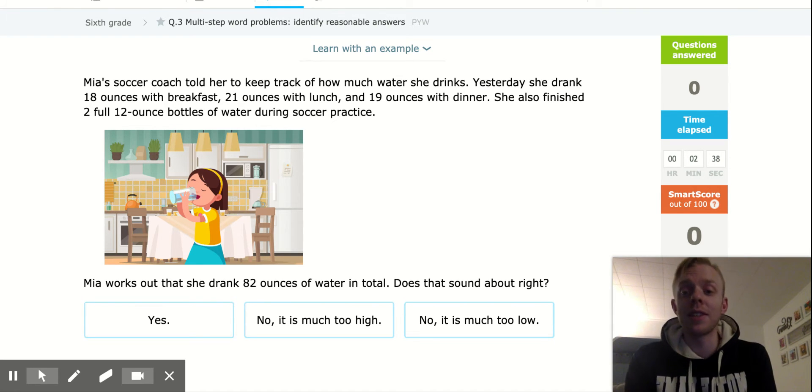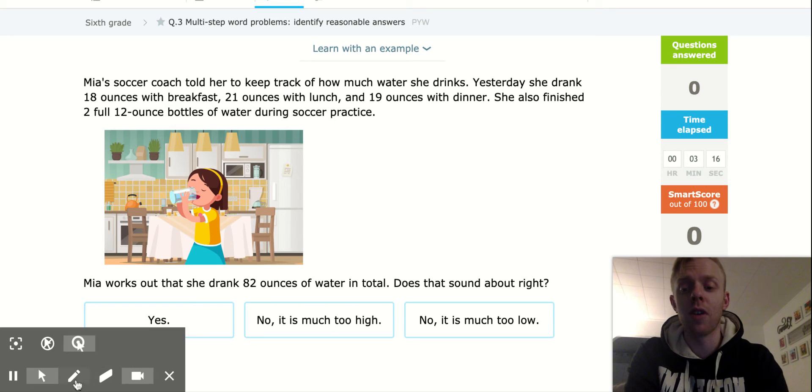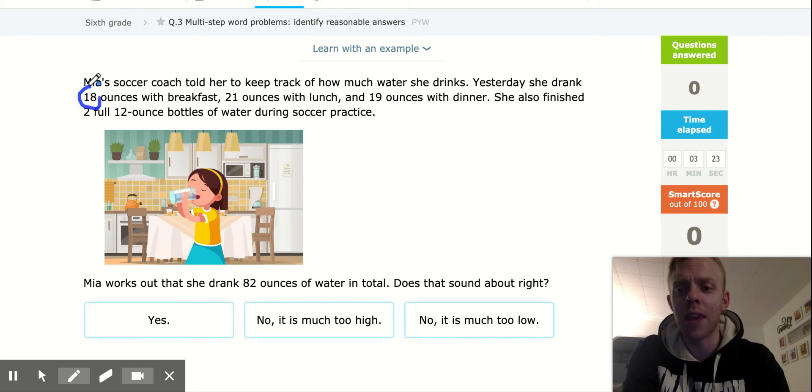All right. So it says, when I see that word about, I immediately think that I can really check my reasonableness by estimating. So let's talk about our estimating strategies. So I'm going to come up here. I see the number 18, talking about water, because that's important to make sure that it fits the problem.